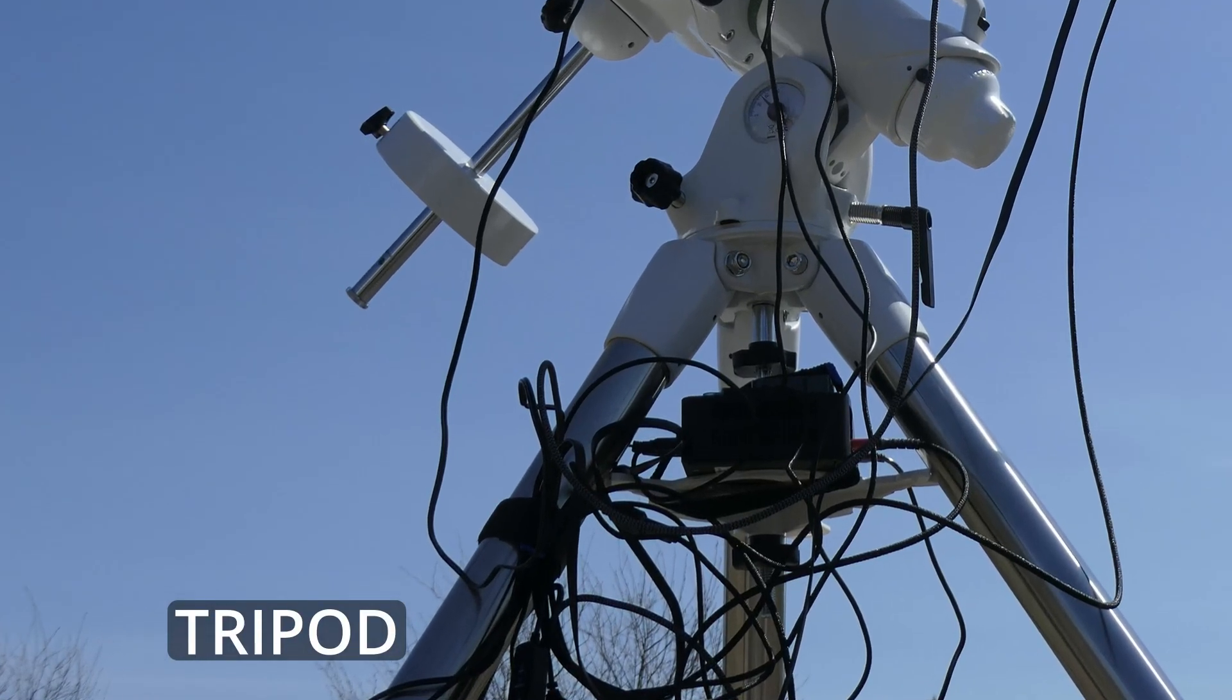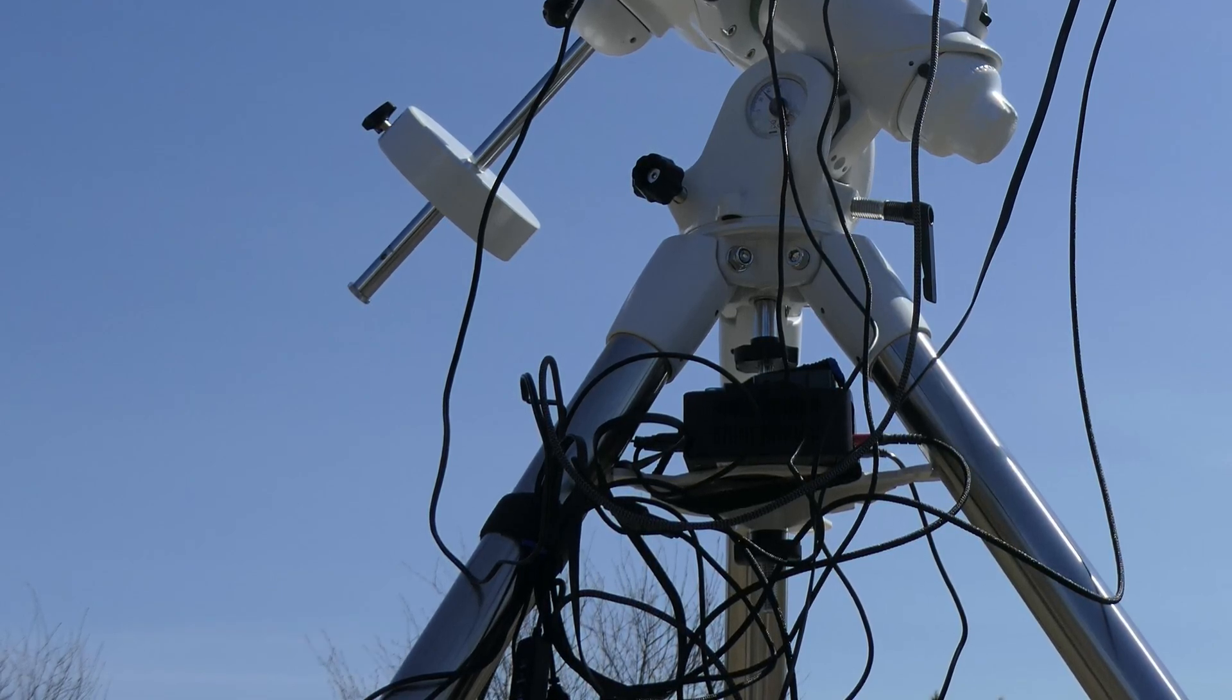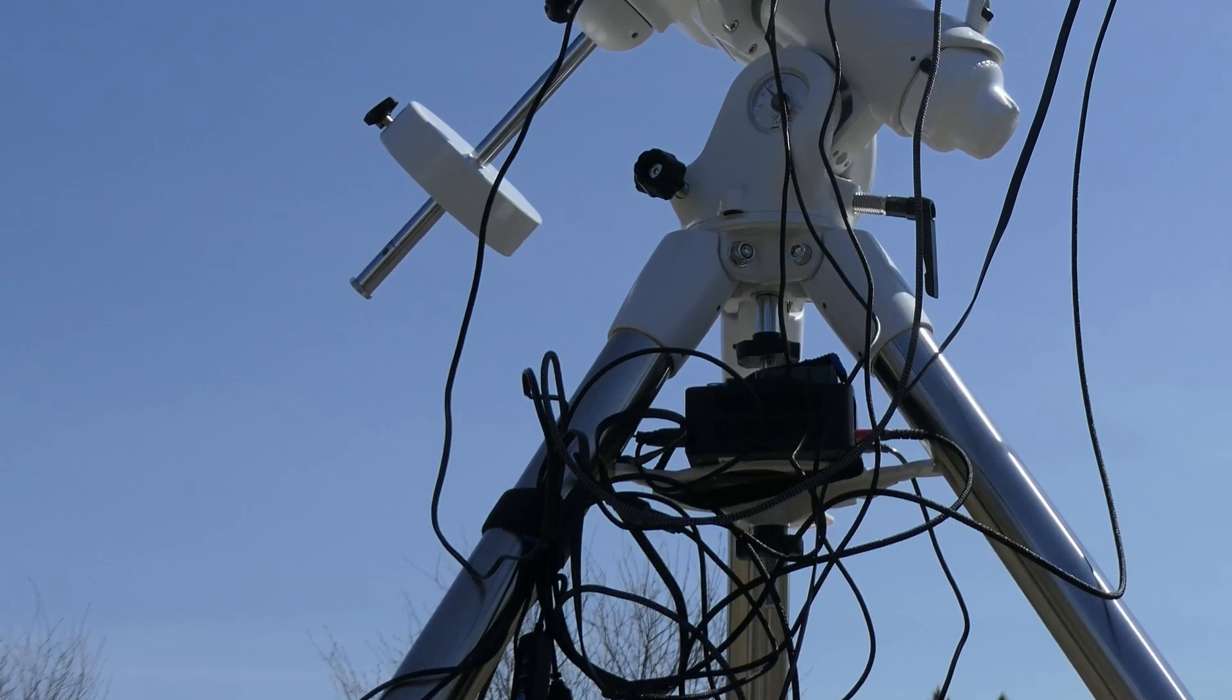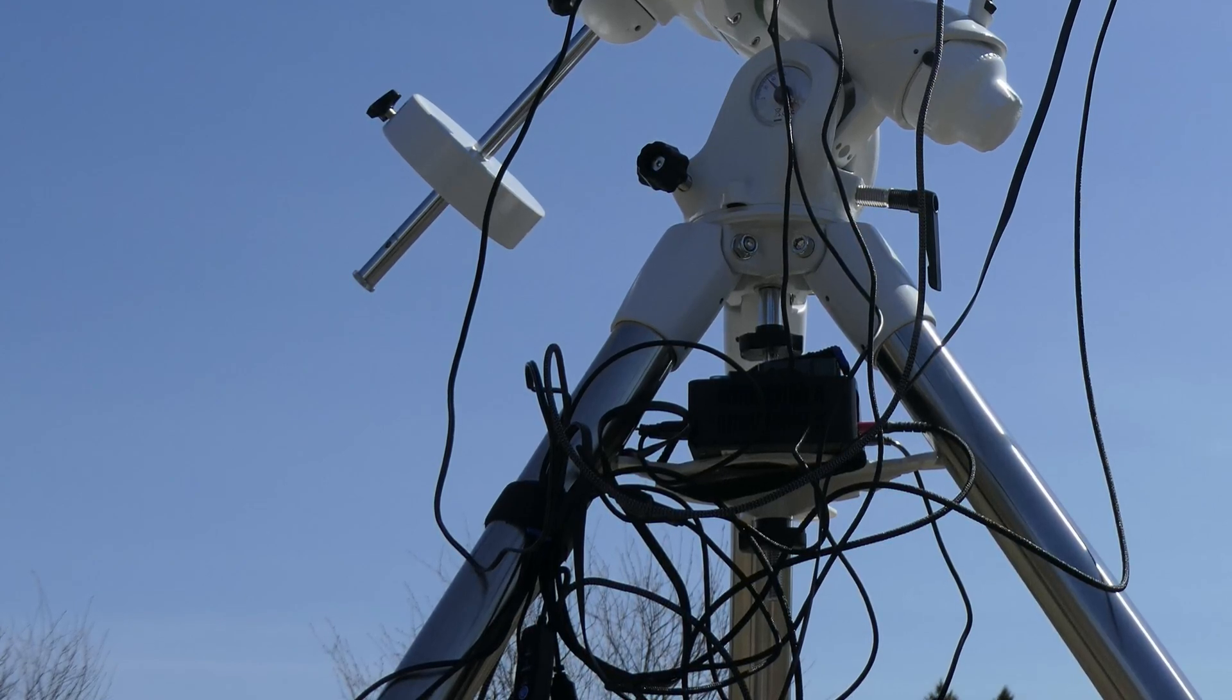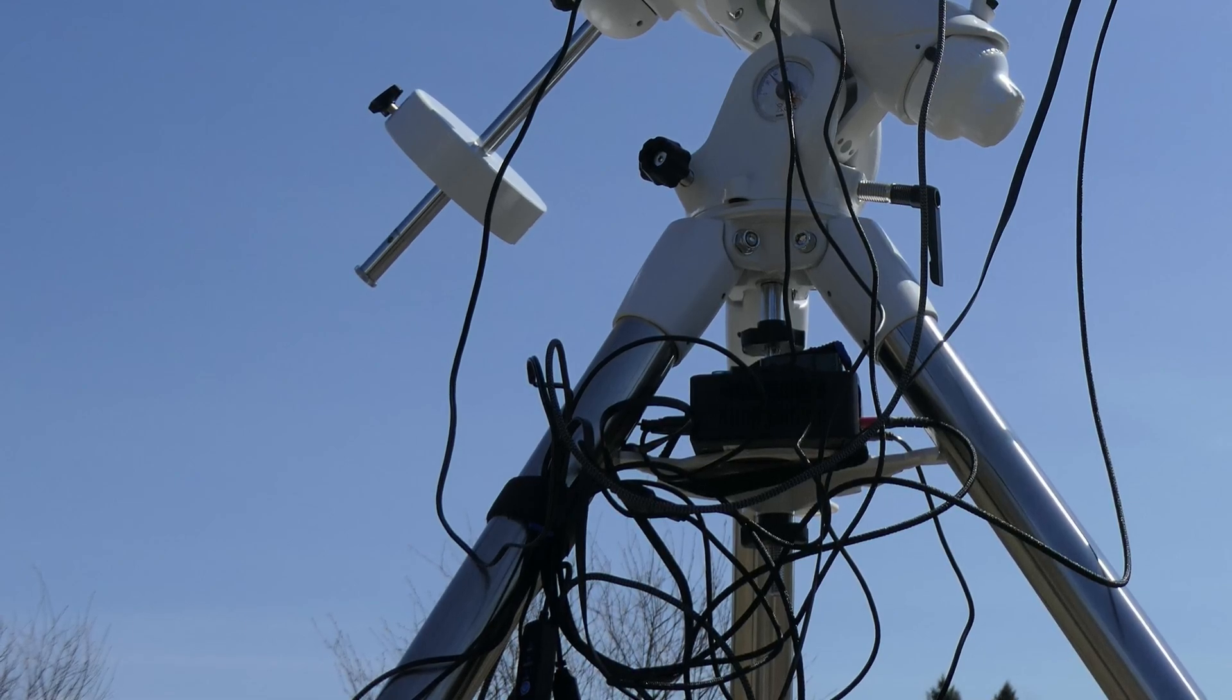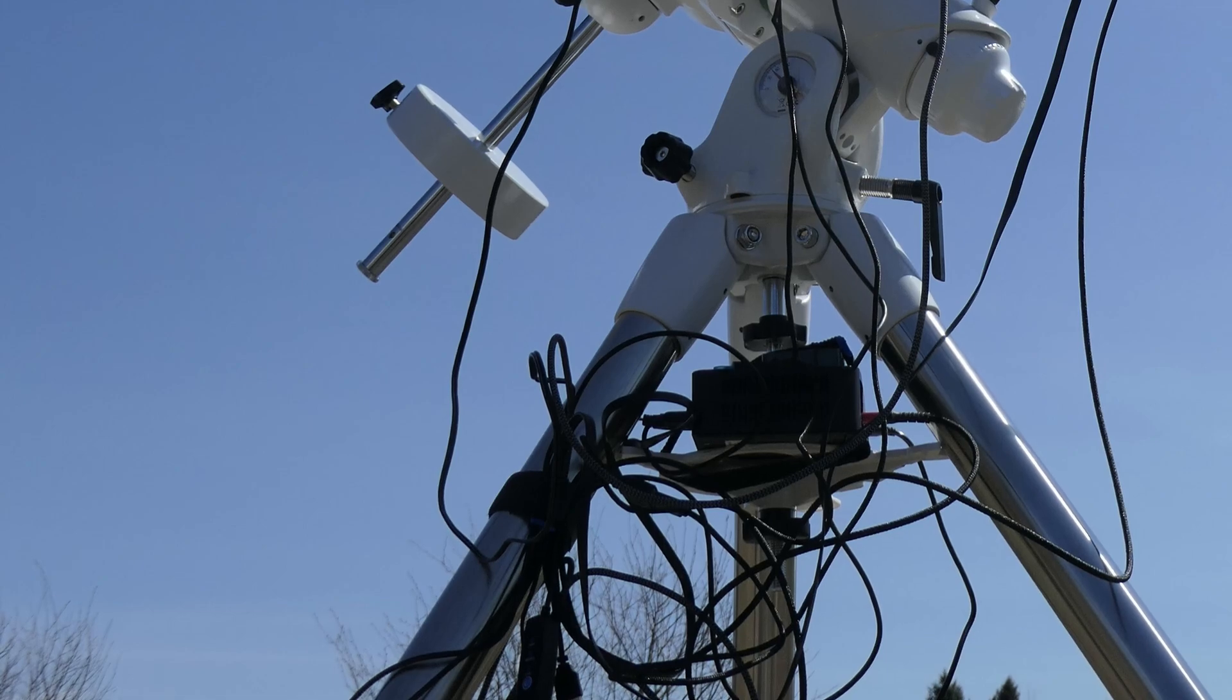It all begins with the tripod, the foundation that holds the telescope. There are variations on tripods, including pillars that are fixed right into the ground, tripods that look more like long poles, four pods, and other variations. But I find the Skywatcher EQ6R tripod to be heavy and solid, so at this time it is my preferred tripod for astrophotography.